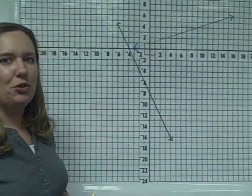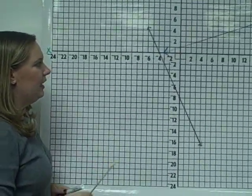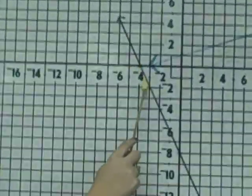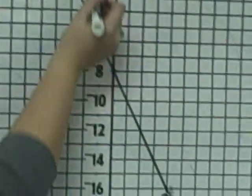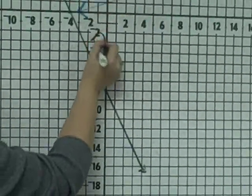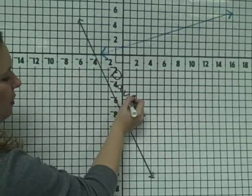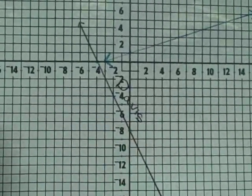We're going to consider the slope of two different lines. If we first look at this black line, if we write our name on it, it appears to be going downhill. So we know that the slope of this line would be negative.